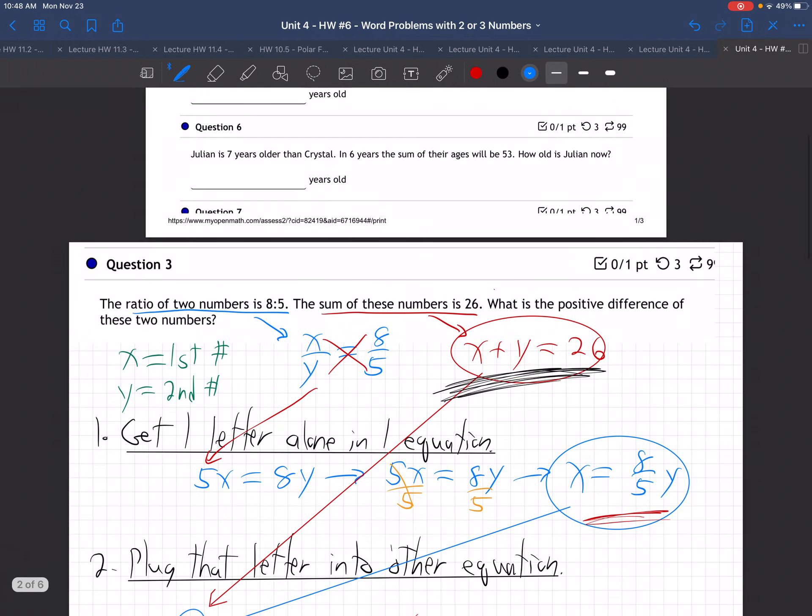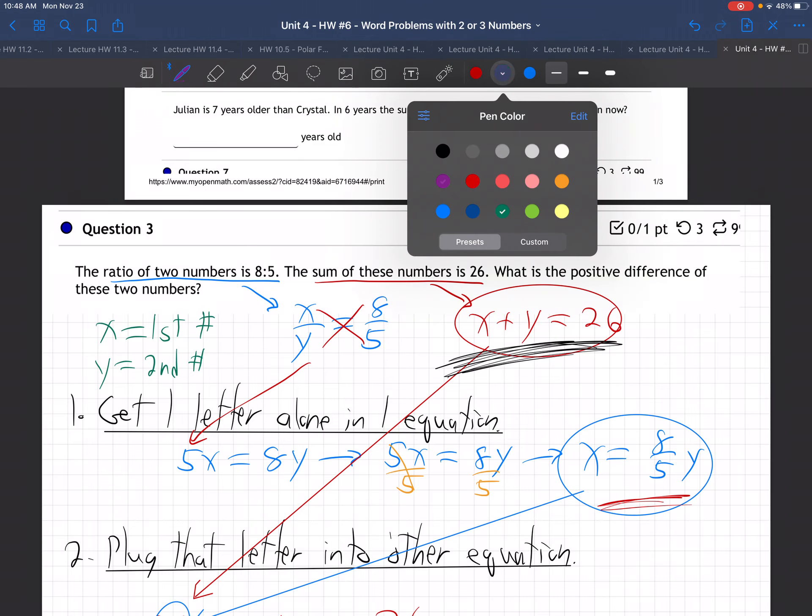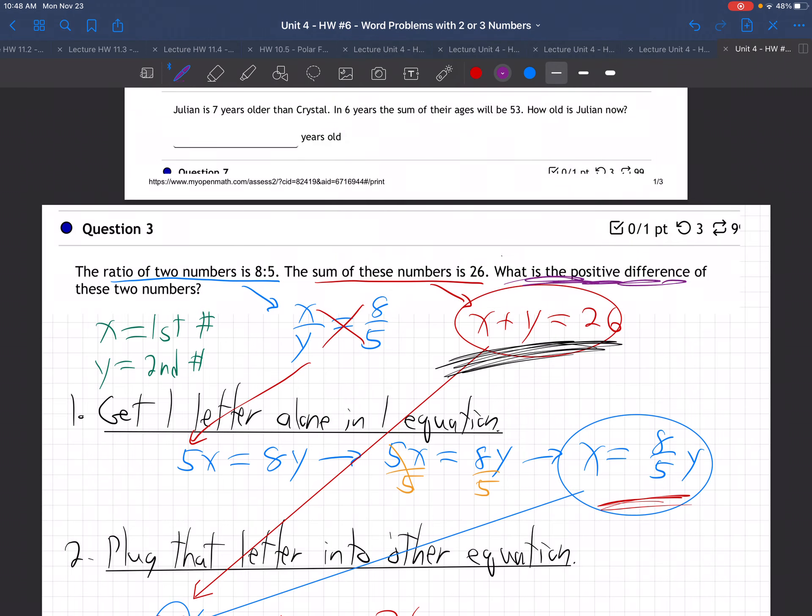Come up here. Now, what do they want from us? When all is said and done, what is the positive difference of these two numbers? So 16 and 10, if you subtract them, the difference is 6. So that's the answer they actually want.